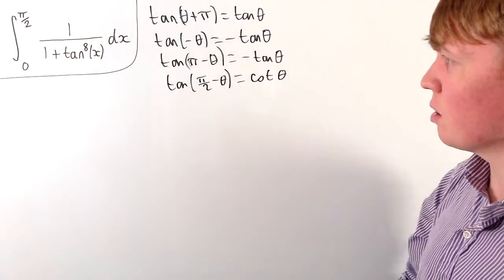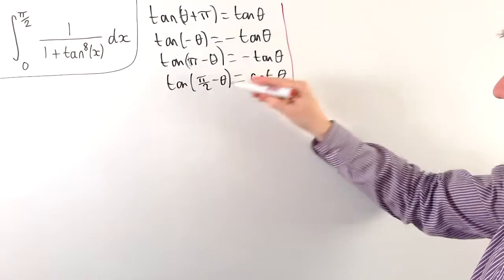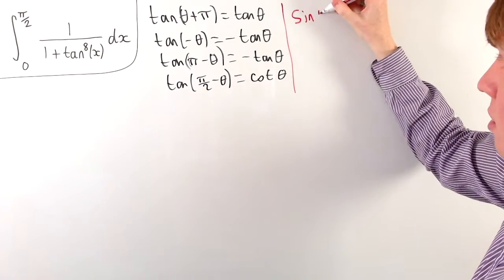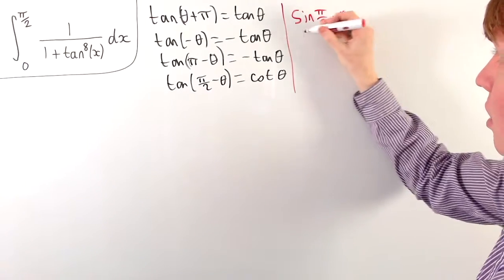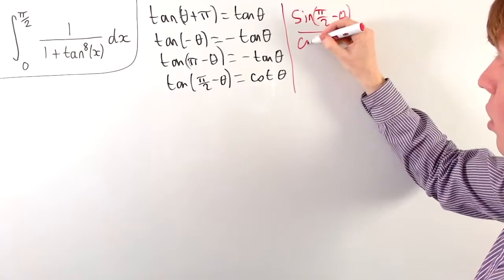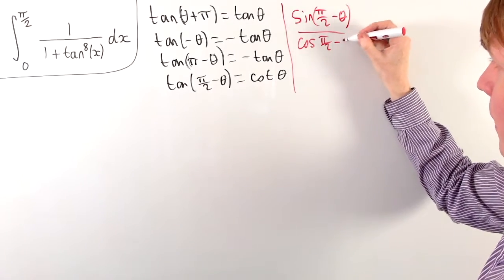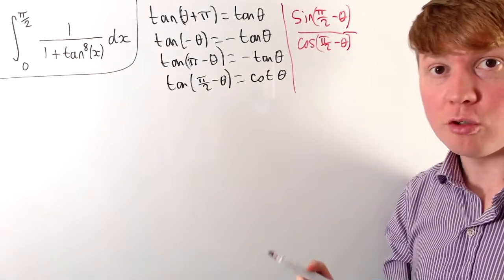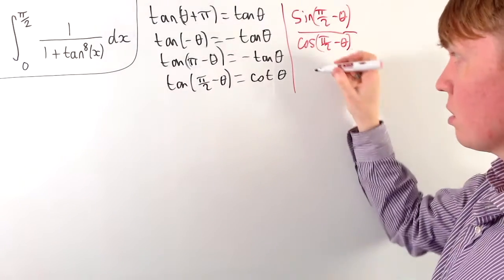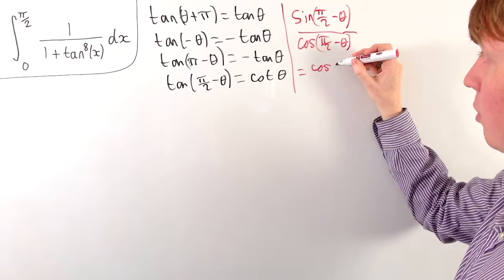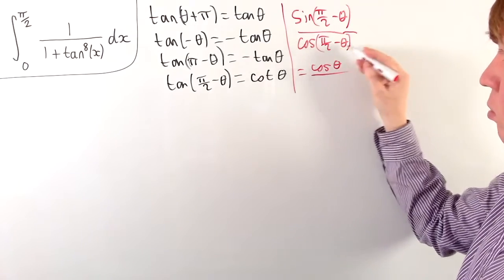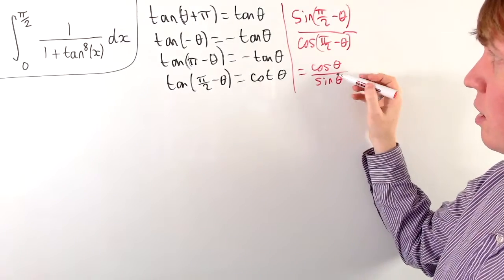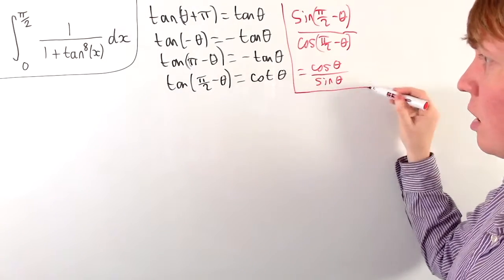We'll spend a moment deriving this — it's not particularly complicated. tan(π/2 − θ) written as sin(π/2 − θ) divided by cos(π/2 − θ). We can use the fact that sin(π/2 − θ) = cos(θ), and cos(π/2 − θ) = sin(θ), so we get cos(θ)/sin(θ), which confirms this equals cot(θ).